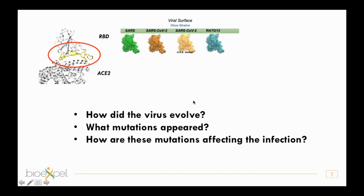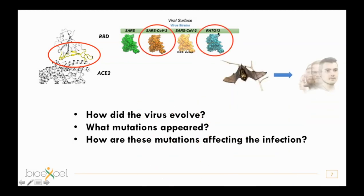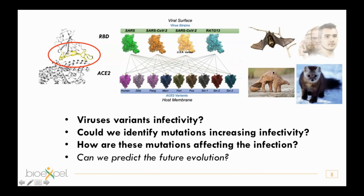The second phase of the project was to go beyond SARS-CoV-2 to different variants: for example, SARS from 2003, the American variant of the current virus, and even viruses affecting bat species. We are interested in understanding what mutations arose going from the bat virus to SARS-CoV-2 — how the virus evolved and how these mutations affect infectivity.